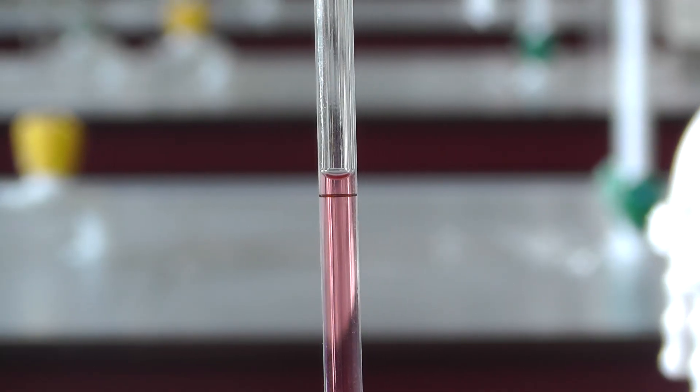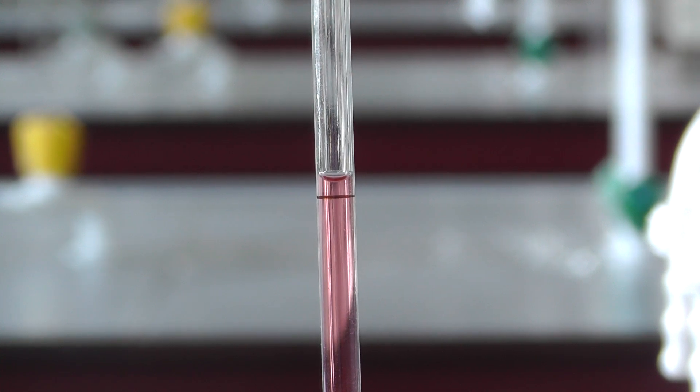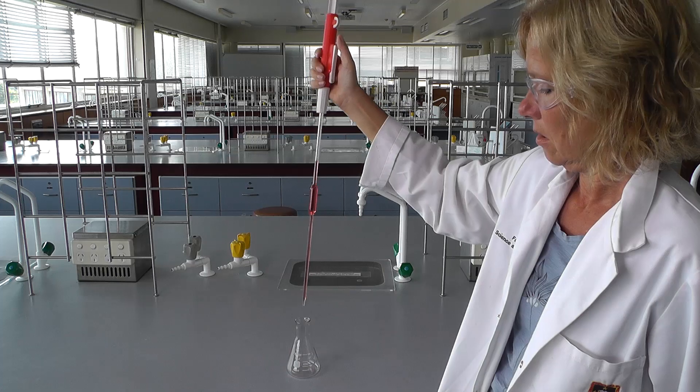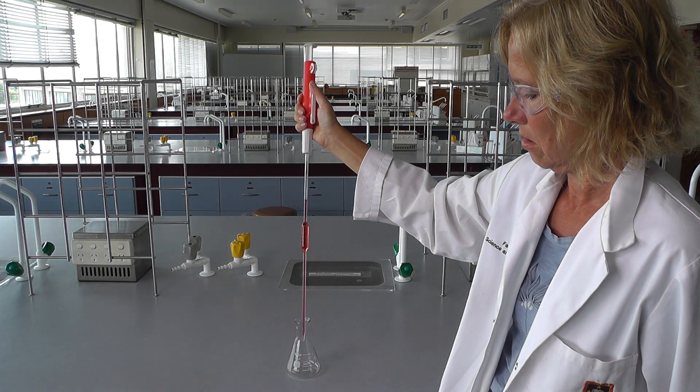Then use the scroll wheel to lower the meniscus to the line. Transfer the pipette to a flask.